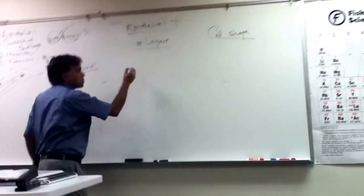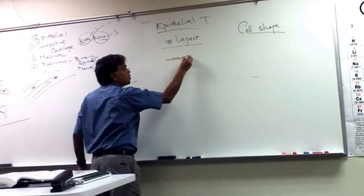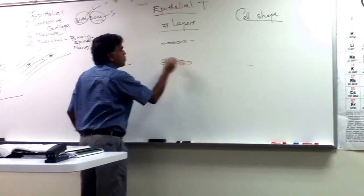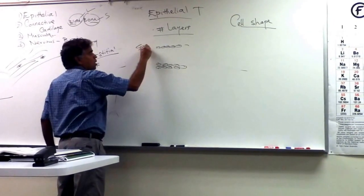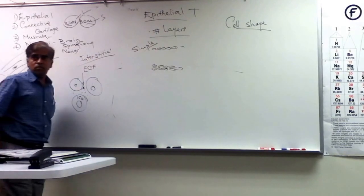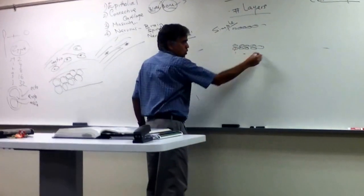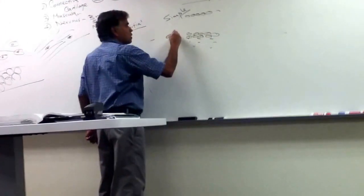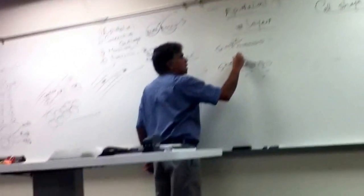The number of layers, whether you have one row or multiple rows. So if you have only one row, they call it simple epithelium. If you have multiple rows, more than two, more than one, even if you have two rows, they call it stratified epithelium.